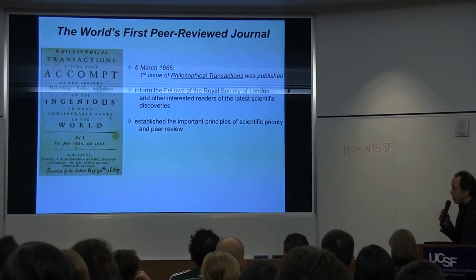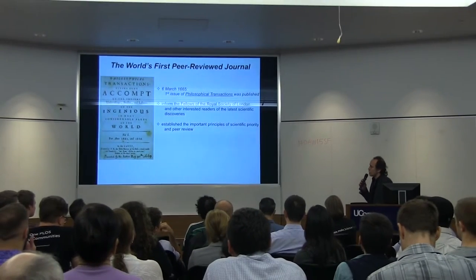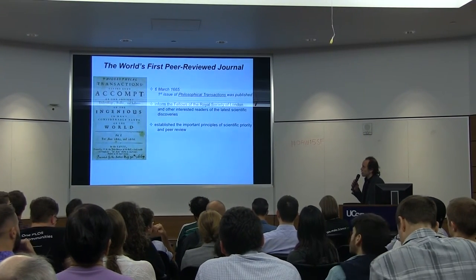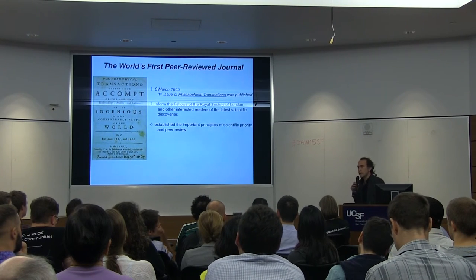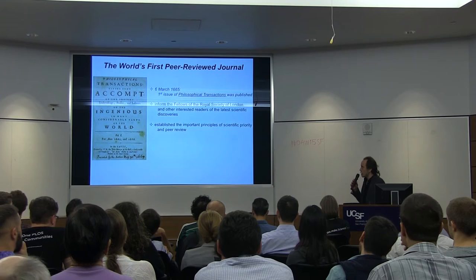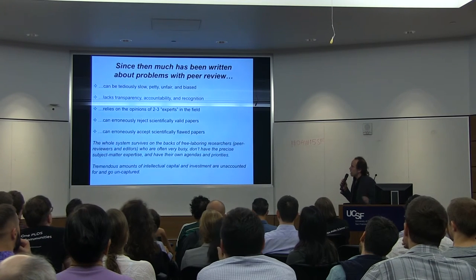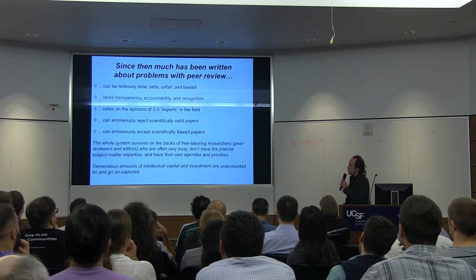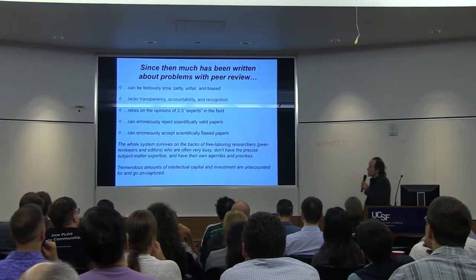Peer review has obviously become an important part of the scholarly communication and publication process. It hasn't really changed much in 350 years, and most of the conventions that we have in peer review came about in the 1950s. There's so much written about problems with peer review, and we could spend all day talking about them and having heated debates.